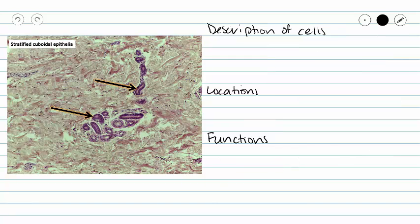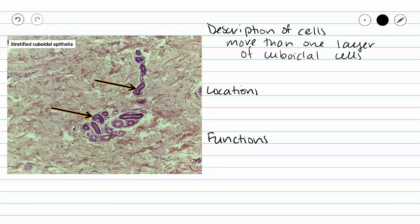Description of cells. Well, we're going to have more than one layer of cuboidal cells. But our cells are really going to retain that nice cuboidal shape. For locations, well, right now, we are in our dermis of our skin.